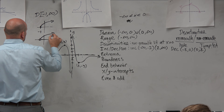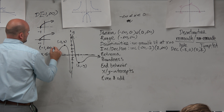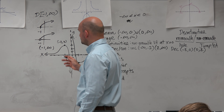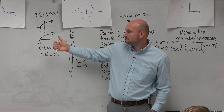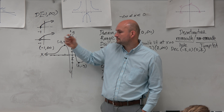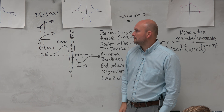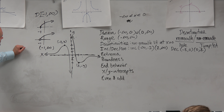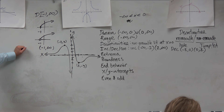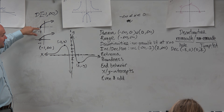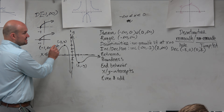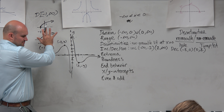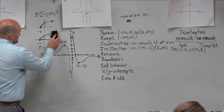The graph is decreasing on the interval negative 2 to 0, and on the interval 0 to 2. What's wrong with saying from negative 2 to 2 that the graph is decreasing? They're not connected. If you say it's decreasing on the interval negative 2 to 2, you'd then assume the graph is decreasing at 0. But 0 is undefined, so that's why we have to separate that out.